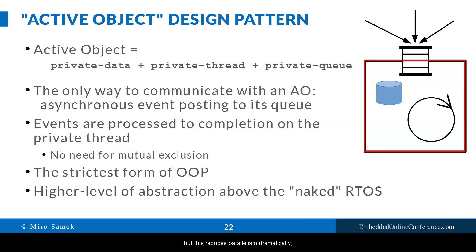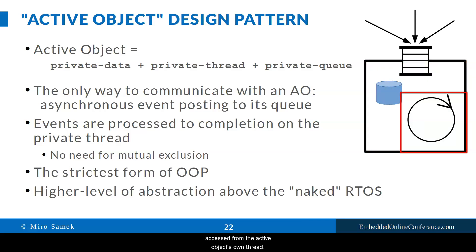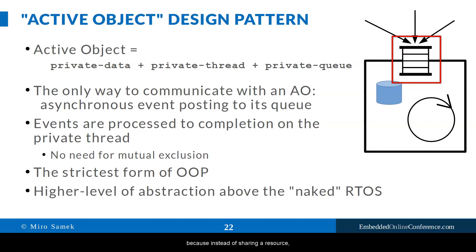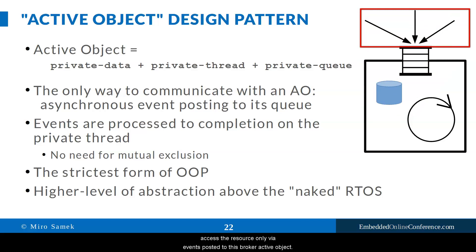But this reduces parallelism dramatically, causes contention, and is a natural enemy of scalability. In contrast, all private data of an active object are truly encapsulated for concurrency, without any mutual exclusion mechanism, because they can only be accessed from the active object's own thread. Note that this encapsulation for concurrency is not a programming language feature, so it is no more difficult to achieve in C than in C++, but it requires programming discipline to avoid sharing resources — known as the share-nothing principle.